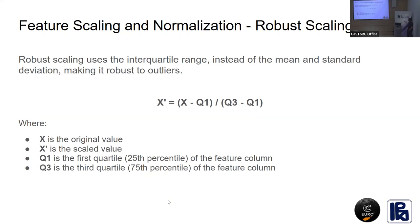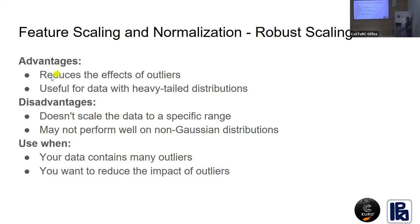The third scaling method is robust scaling using the IQR method. Instead of using min and max, you use Q1 and Q3 which cover 50% of your data. This reduces the effect of outliers and is very useful for heavy-tail distributions. The disadvantage is it doesn't scale to a specific range. Use robust scaling when data contains many outliers and you want to reduce their effect, and when your distribution is non-Gaussian.